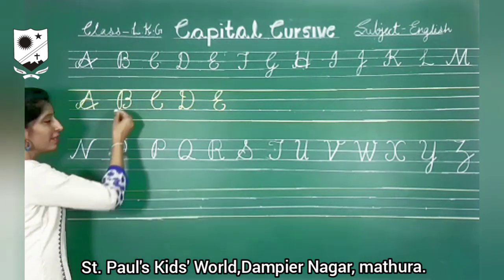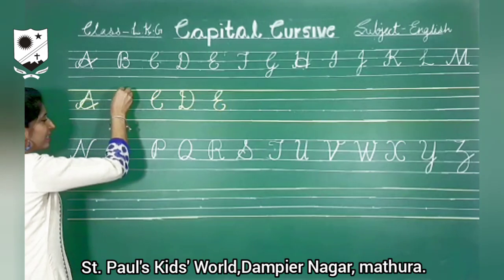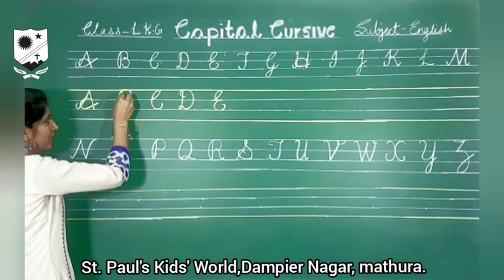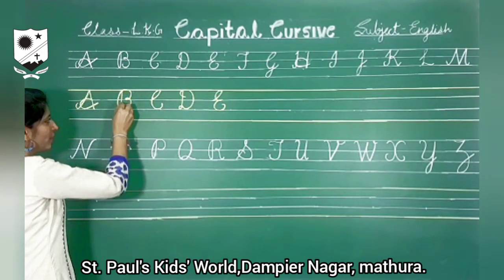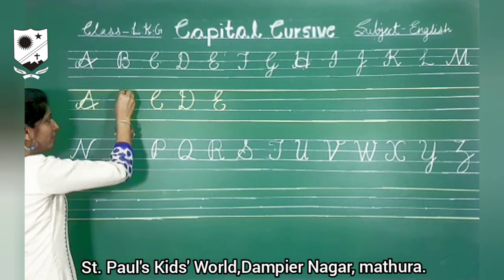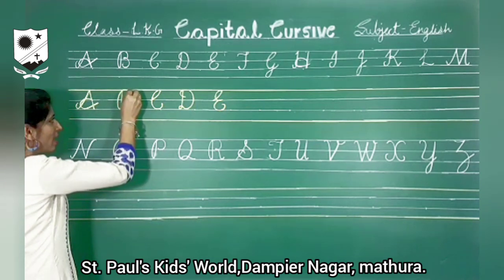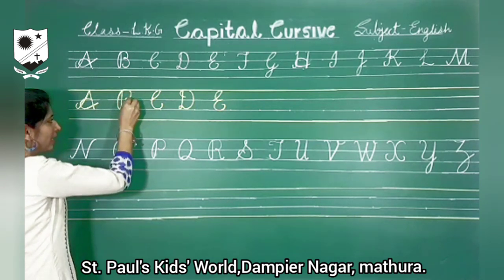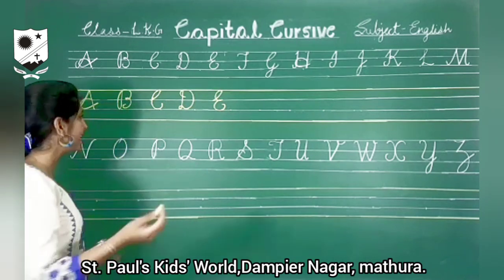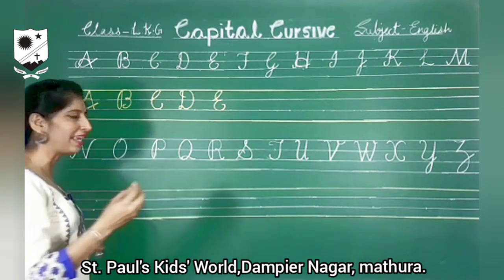Now capital B. Start from the first line. Straight line, curve, round and one more round and leave it. Capital B.